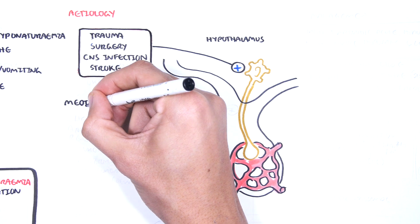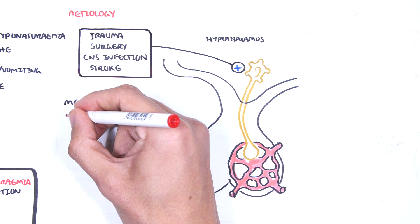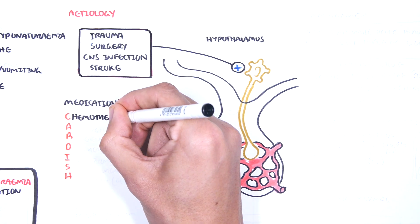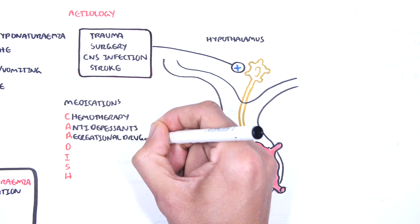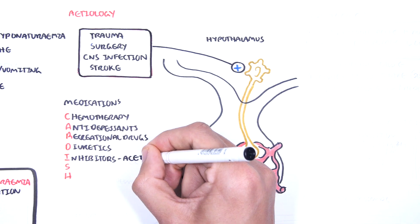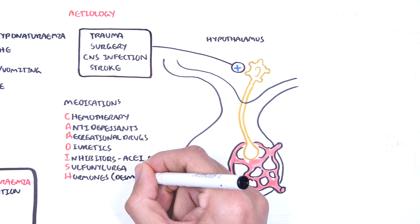Medications also somehow increase production or the effect of ADH. These medications can be remembered with the acronym CAR-DISH: chemotherapy, antidepressants, recreational drugs, diuretics, inhibitors such as ACE inhibitors and SSRIs, sulfonylurea, and H is for hormones such as desmopressin.